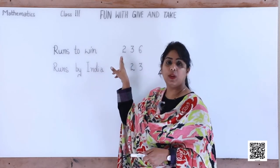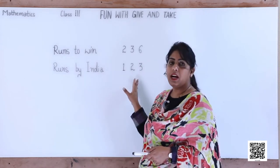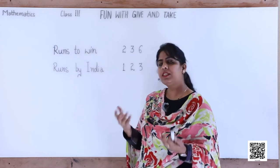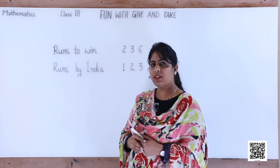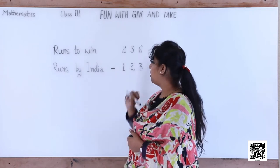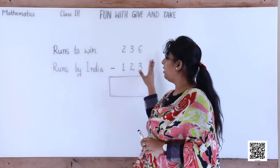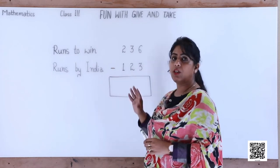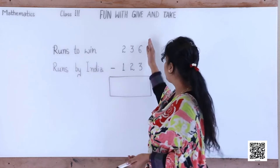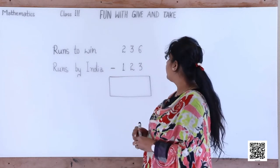From the total runs required to win, the runs already made by India will be subtracted. So let's do it — what's the sign for subtraction? Yes, we put a minus mark. We begin with the ones place. You have done a lot of subtraction sums in earlier chapters, so let's make some triangles.